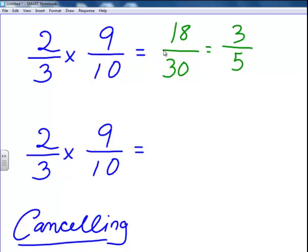What we're doing is looking at whether there's a relationship between the 2 and the 10, numbers that are across the fraction, and then the 3 and the 9. I can't look at 2 and 9 and 3 and 10. I have to look diagonally across. I need to make an X when I'm cancelling.